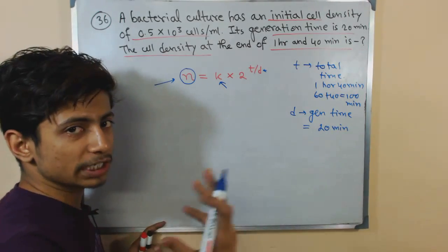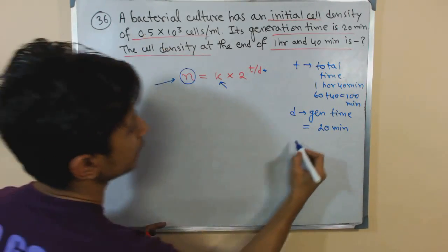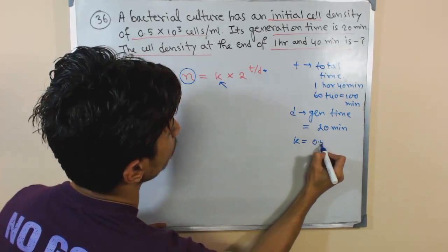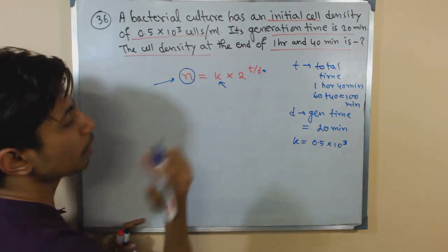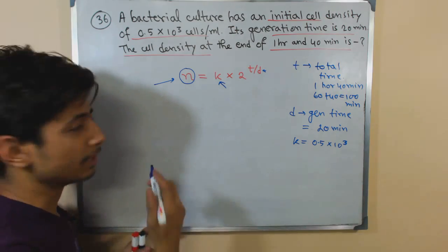D is the generation time, and in this case the generation time is twenty minutes. The value for K, the population density at the beginning, is provided so K was 0.5 into 10 to the power 3.